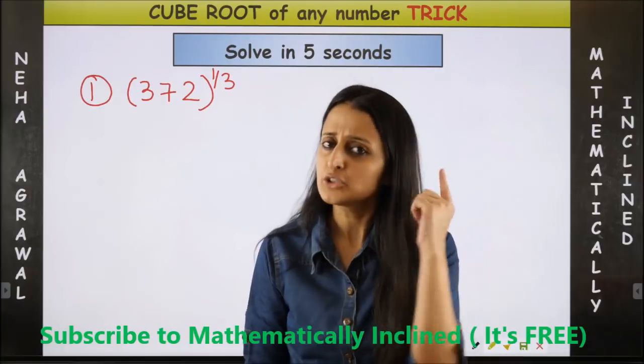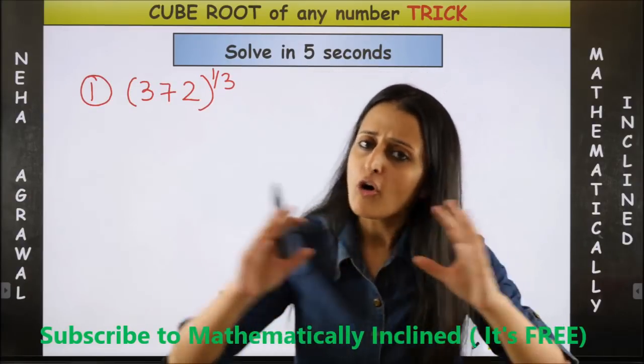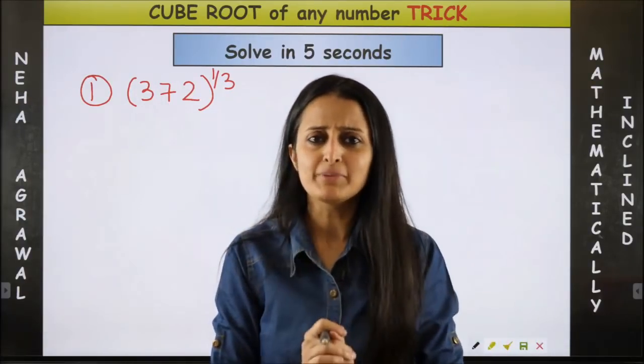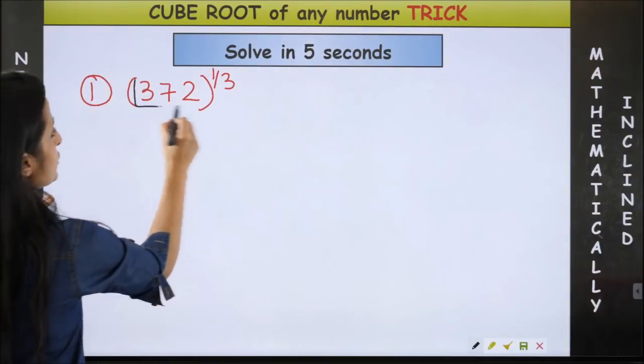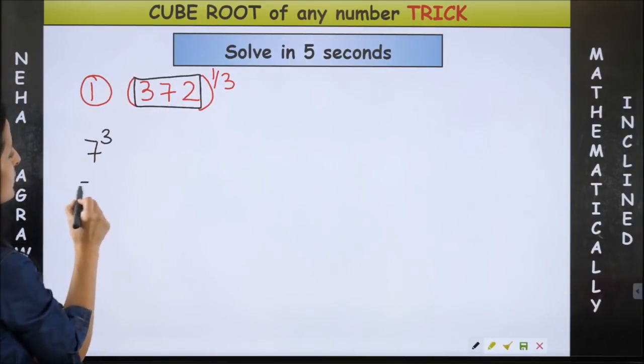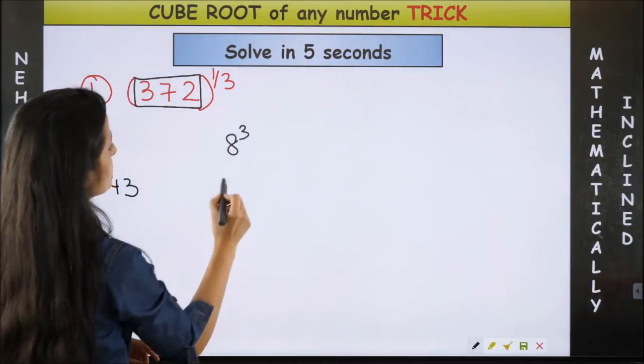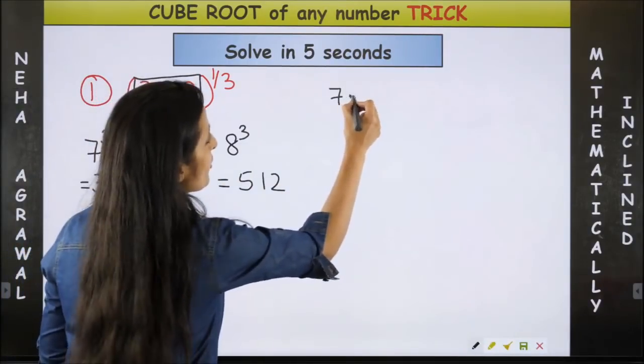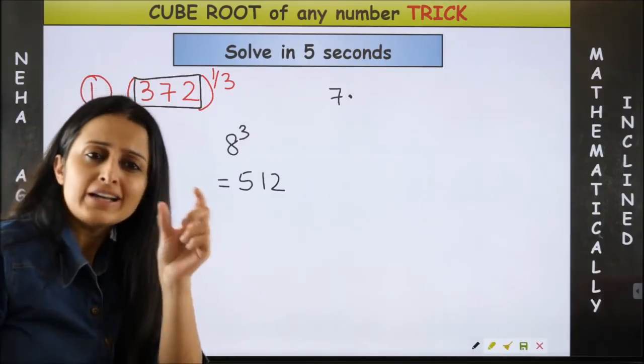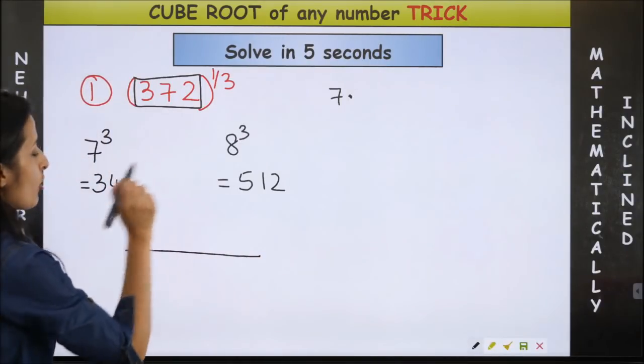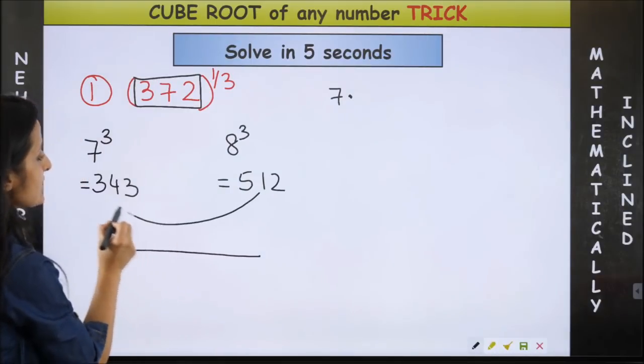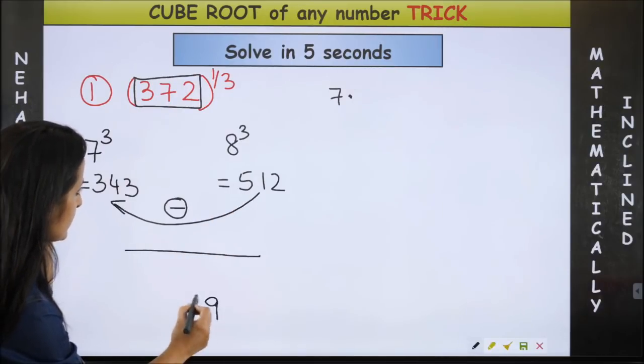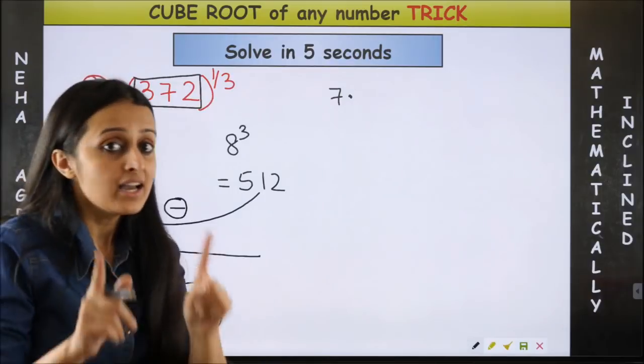And with this, let's roll. So let's begin our magic with a three-digit number first. For all the numbers, all you need to remember is one cube to ten cube, which is simple. So now you know 372 is going to lie between seven cube, which is 343, and eight cube, which is 512. Your answer is going to be 7 point something. Now how to find this something? So what you can do is your denominator could be this minus this.